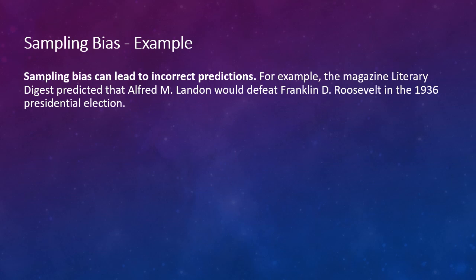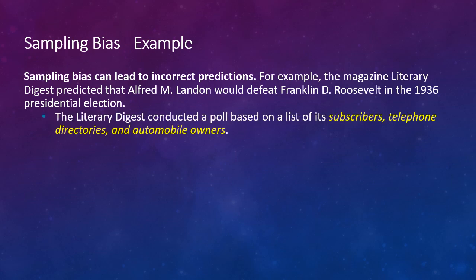Sampling bias can lead to incorrect predictions. For example, the magazine Literary Digest predicted that Alfred M. Landon would defeat Franklin D. Roosevelt in the 1936 presidential election. They conducted a poll based on a list of its subscribers, telephone directories, and automobile owners.